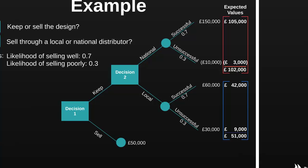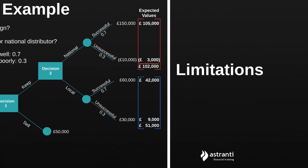Let's now talk about some of the limitations of this approach. First, this decision tree has not considered the time value of money. If we were to sell the design, we would receive the £50,000 payment right now, whereas it will take longer to realise the profits from going with either the local or national distributor. Because of this, selling the design to our competitors for £50,000 is likely to be a better choice than it appears here — the decision tree doesn't consider the fact that receiving money sooner is better.